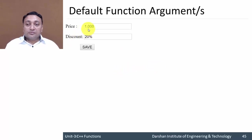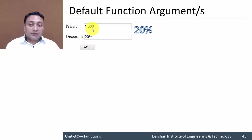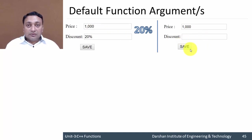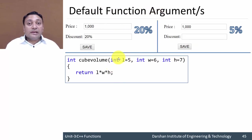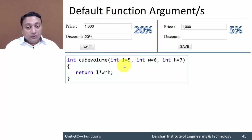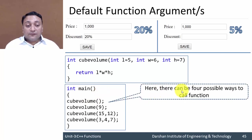Now let us discuss default function arguments. Suppose we have billing software where you provide a price of 1000 and a discount of 20% — it calculates the discount. But if you don't provide any discount, by default it gives 5%. This is a default value. Default function arguments are similar to variable initialization — just as you assign a value to a variable, you can provide default values in function arguments.